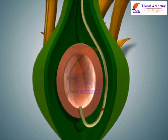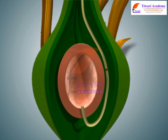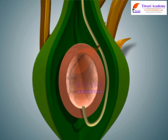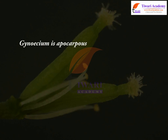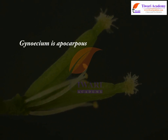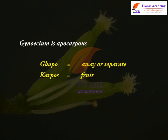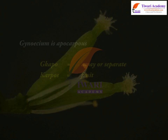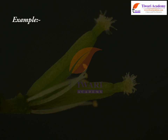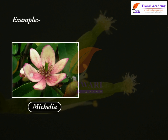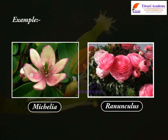Each carpal represents a megasporophyll. Gynesium is apocarpus — 'apo' meaning away or separate, 'karpos' meaning fruit — if the carpals are free. Examples: Michelia, Ranunculus.